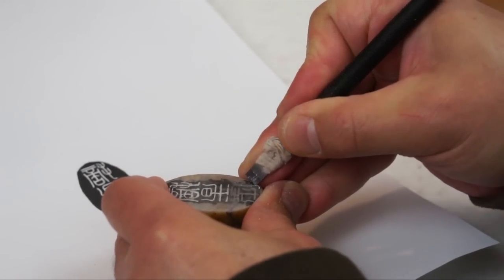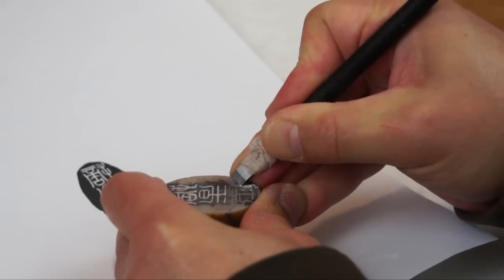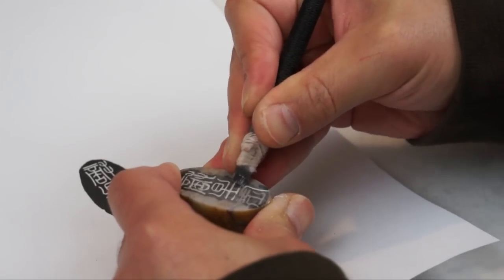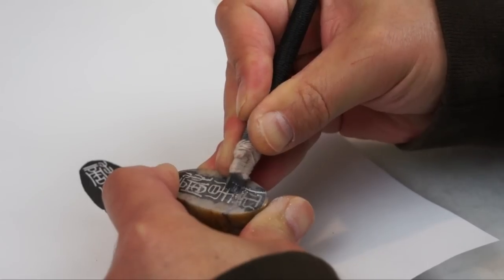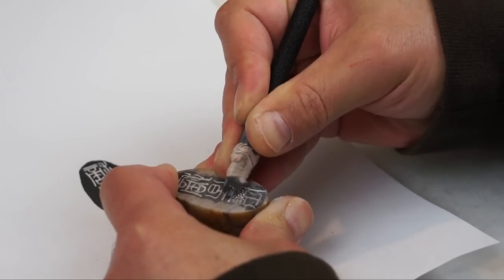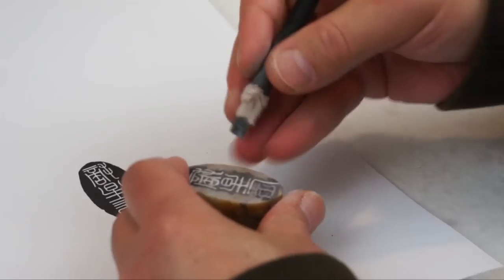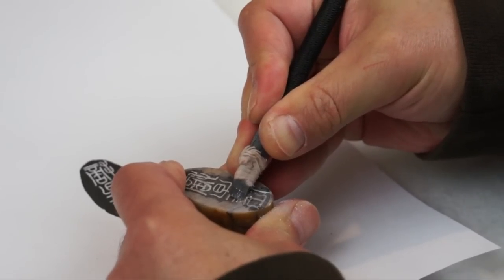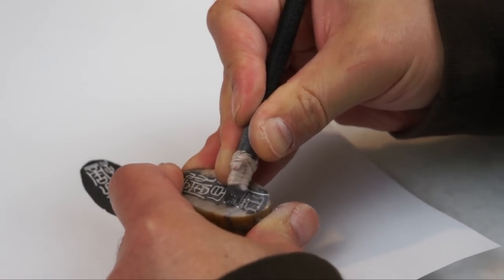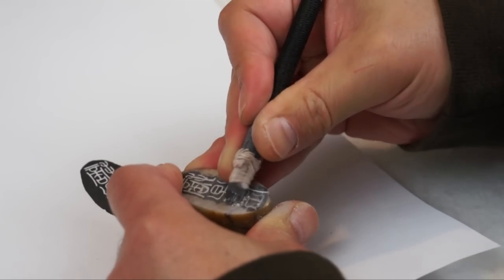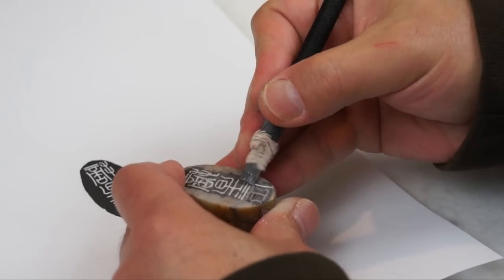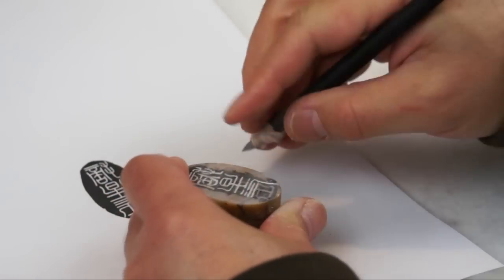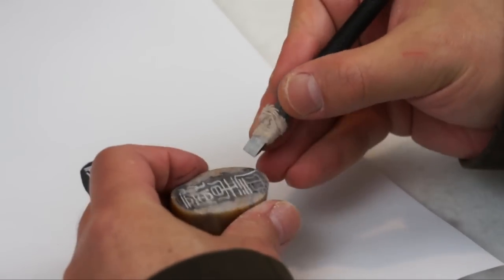So try to make the line very delicate. This last character is Chen. It's the collective name for all stars including the sun, the moon, the galaxy. So Xing Chen means the stars.